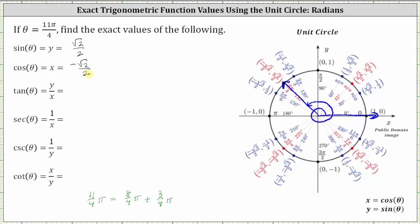The tangent function value is equal to y divided by x. Notice how the x and y coordinates are opposites, and therefore we should be able to recognize the quotient is negative one. But showing the work, y divided by x is square root two divided by two, divided by negative square root two divided by two, which again does simplify to negative one.